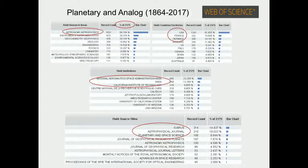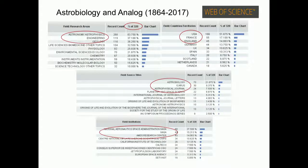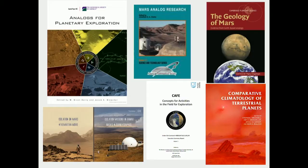There are important reference books on this subject. One is the book 'Analogues for Planetary Exploration,' for which I was a reviewer at the Geological Society of America. There are also books about Mars analog research, and studies about analog space research in Hawaii — we want to develop a similar one in Spain at Lanzarote, which would be the first in Europe and second in the world. I also recommend the CAFE book — Concepts for Activities in the Field for Exploration — which presents an important selection of analogues.